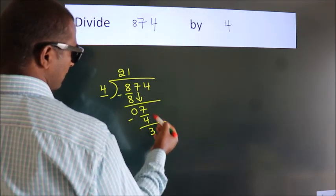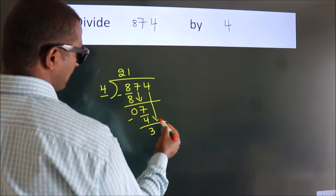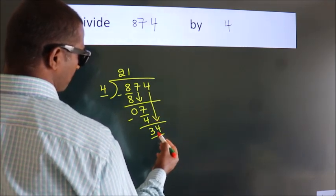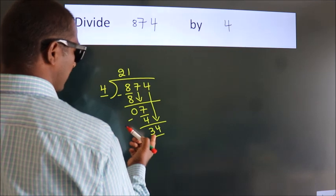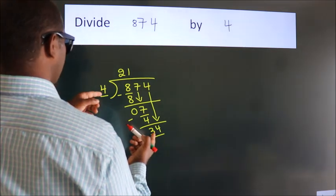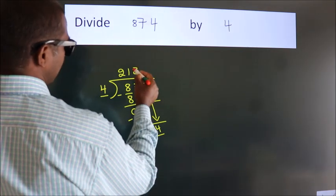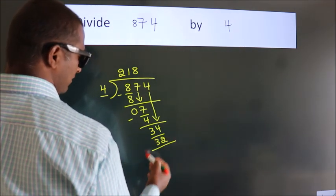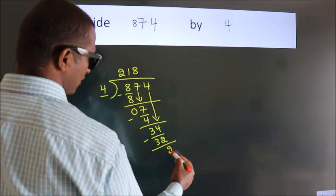After this, bring down the beside number. So 4 down. So 34. A number close to 34 in the 4 table is 4 times 8, which is 32. Now we subtract. We get 2.